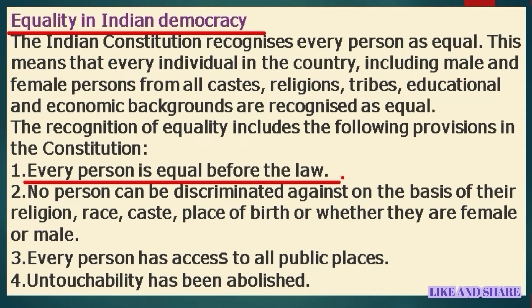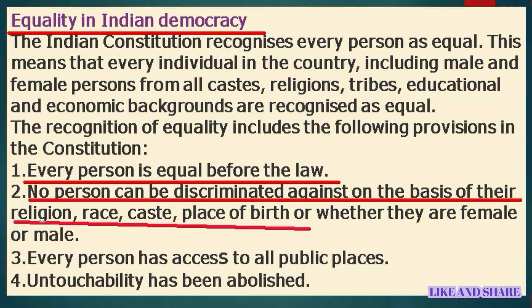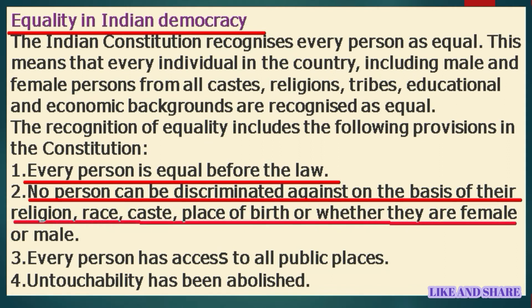The first provision is that every person is equal before the law — every citizen has the same rights, with no exceptions for rich people, politicians, or anyone else. Rich people don't get extra legal rights just because they are rich, and cannot take rights away from others. The second provision is that no person can be discriminated against on the basis of their religion, race, caste, place of birth, or sex.